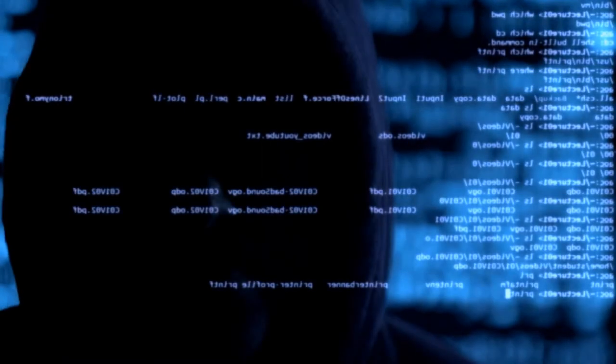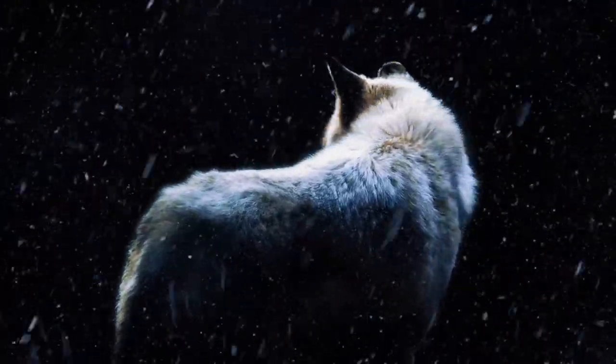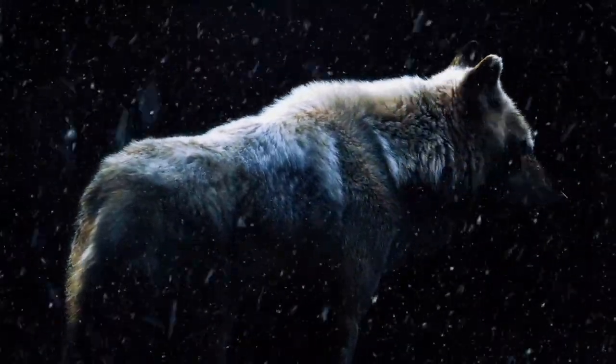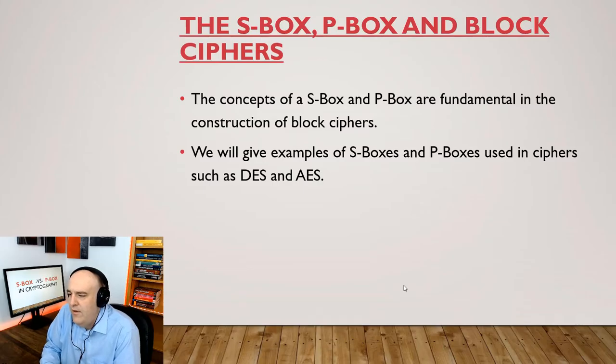In this video I want to talk about two fundamental components in the construction of block ciphers, and that's the S-Box and the P-Box. These are fundamental components when you construct block ciphers. We're going to see some examples of S-Boxes and P-Boxes used in the common ciphers DES and AES.